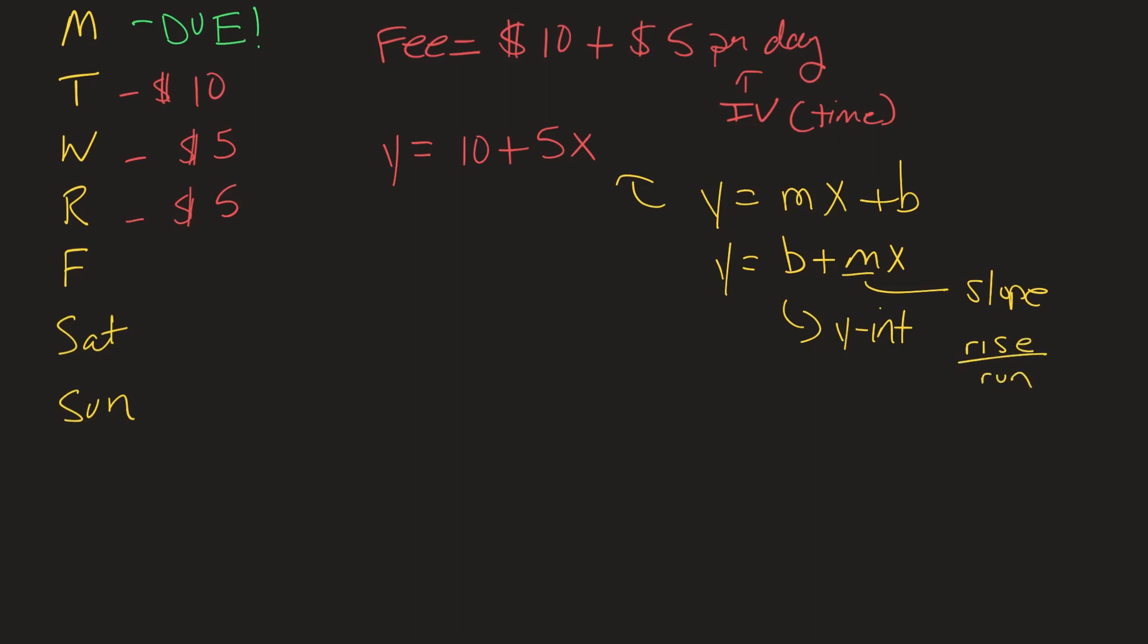So here we know that our y intercept is 10. So remember the y intercept is where x is zero and y in this case is 10. So our line will cross our graph on the y axis at the point 0, 10. And then the slope over here tells us like from there where to proceed. So in this case m equals 5, so rise over run is actually 5 over 1. That's our slope.